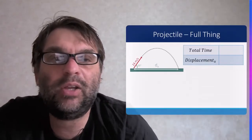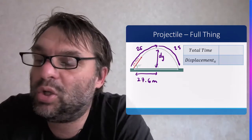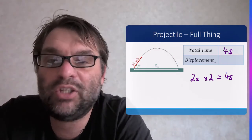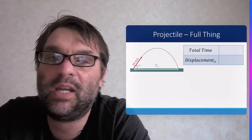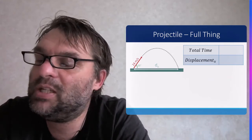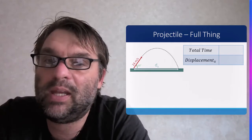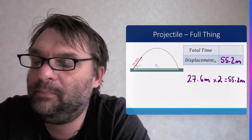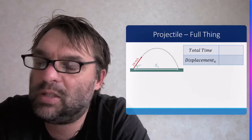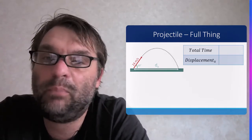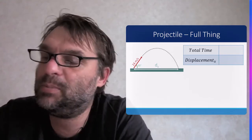So for the full projectile motion, the total time is 2 × 2 seconds. It takes 2 seconds to reach the top and 2 seconds to come down, giving 4 seconds overall. If it's 27.6 meters in the X direction at the halfway point, then it'll be double that — 27.6 × 2 = 55.2 meters total displacement in the X direction.